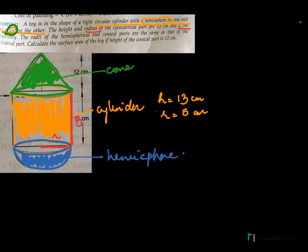The radii of the hemispherical and conical parts are the same. So the radius for the cone is also 5, and for the hemisphere the radius is also 5.